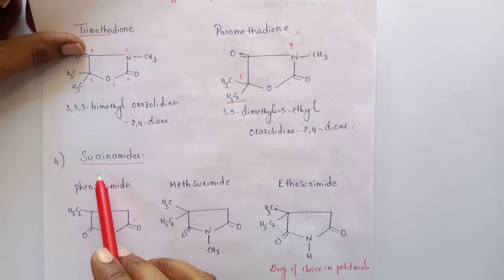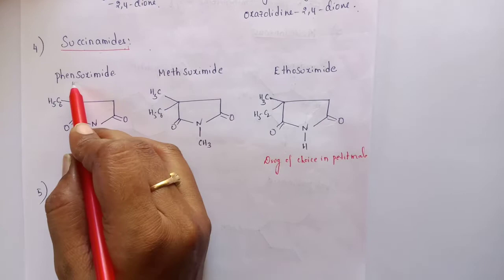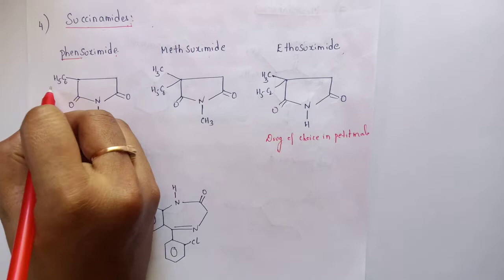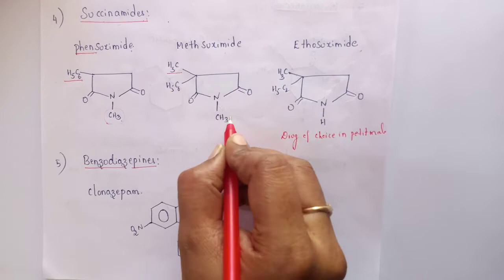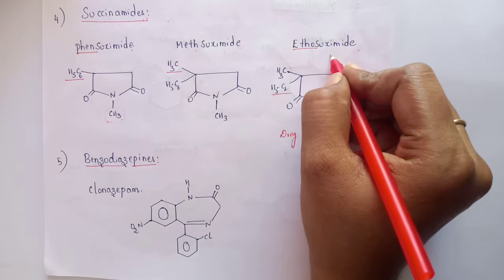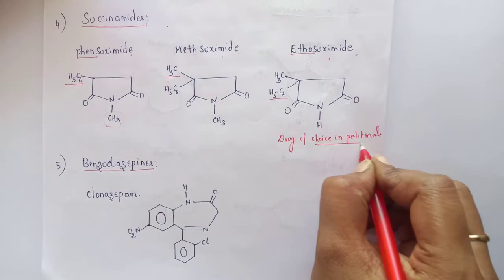The next class is succinimides, with three examples. Succinimide is the cyclic derivative of succinic acid in amide form. The examples are phensuximide — which possesses a phenyl ring along with methyl — methsuximide, which possesses phenyl and methyl, and ethosuximide, which possesses an ethyl functional group. Phenytoin is the drug of choice in grand mal epilepsy, whereas ethosuximide is the drug of choice in petit mal epilepsy.